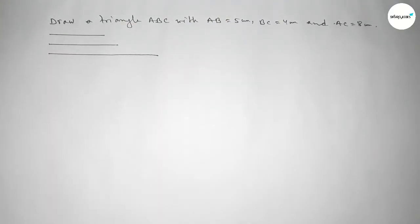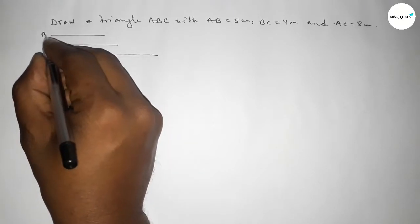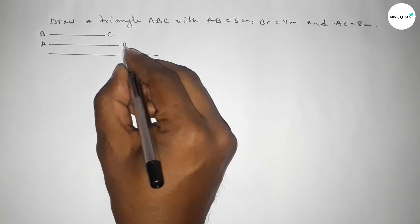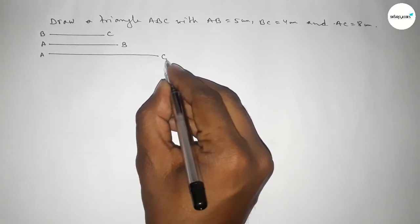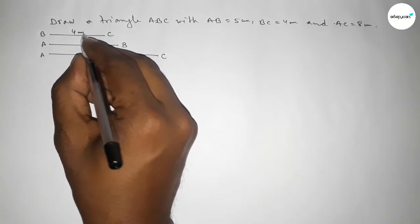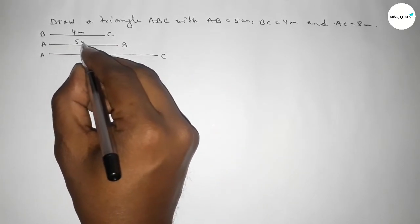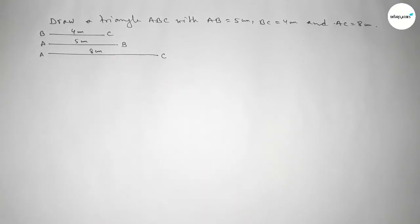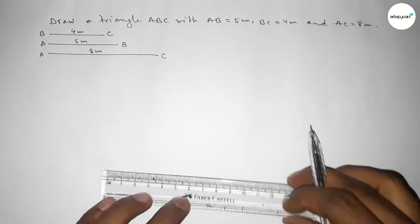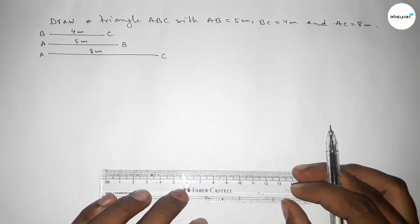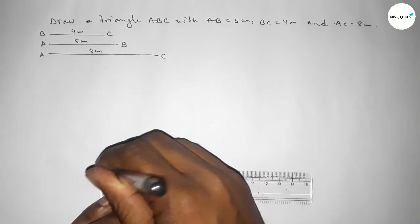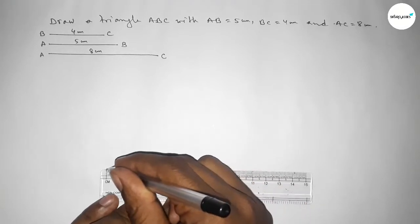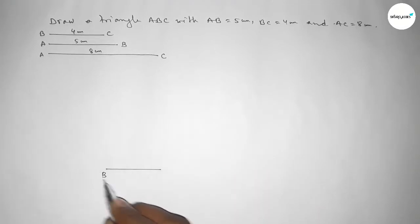Now labeling: this one is BC (4 centimeters), this one is AB (5 centimeters), and this one is AC (8 centimeters). First we draw the base BC — a line of length 4 centimeters, from zero to four. Taking point B at the start and point C at the end.